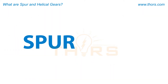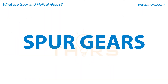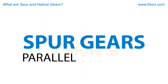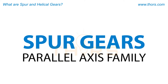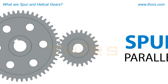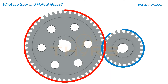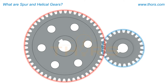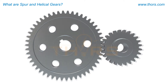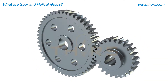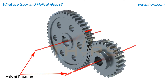Spur gears, which are part of the parallel axis gear family, are the simplest and most common type of gearing. Spur gear teeth are cut into the outside diameter of a cylindrical gear blank and aligned parallel to the gear axis of rotation.